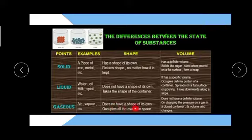What are characteristics of gases? Examples are air, vapor, etc. Shape: does not have a shape of its own, occupies all the available space. What is volume of gases? Does not have a definite volume. On changing the pressure on a gas in the container, its volume also changes.